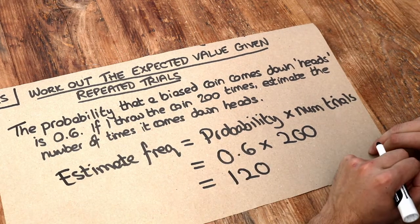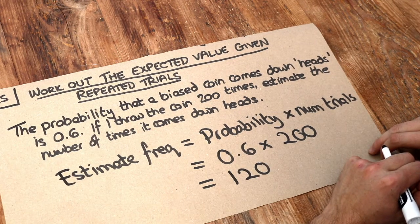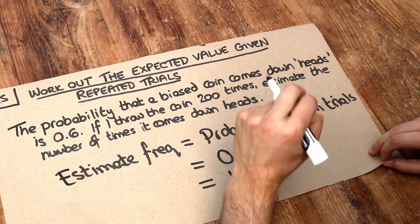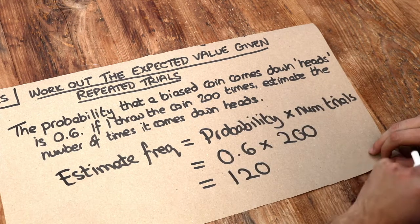So expect to see heads on the coin around 120 times. But as I said, because the coin is random it could be a bit more than that, it could be a bit less than that.